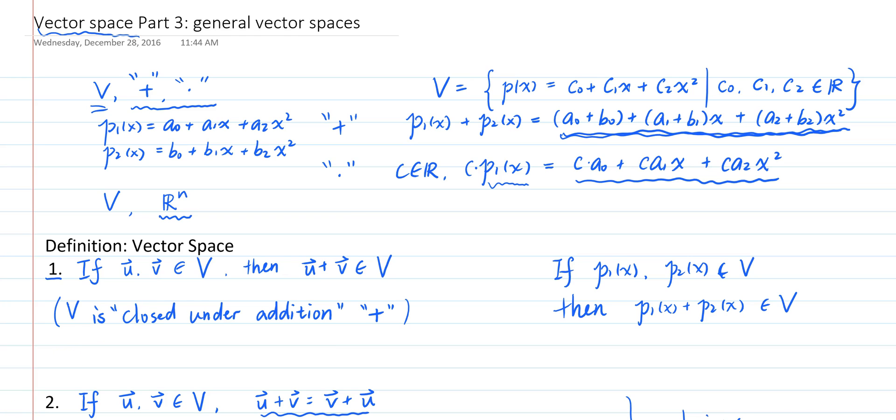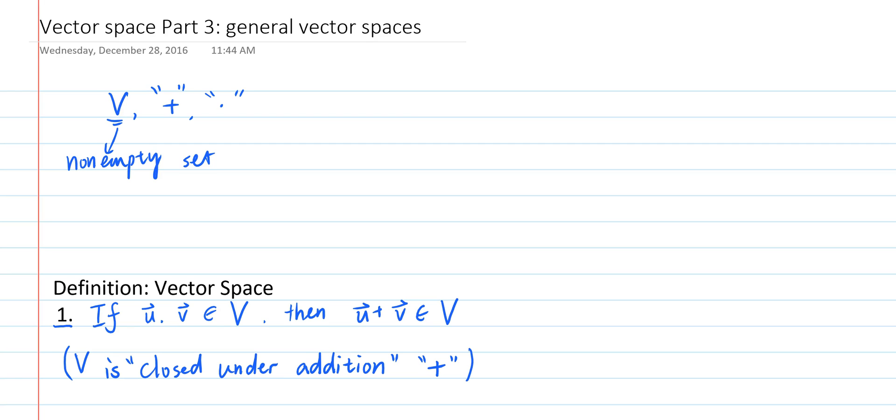This motivates us to define a concept for those sets that share these properties. So here's the official definition: If V is a non-empty set on which two operations, addition and scalar multiplication, can be defined, and V together with the two operations satisfy these 10 properties, then V is said to be a vector space, and any elements of V are called vectors.